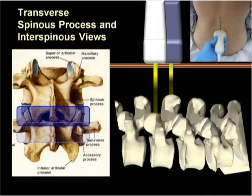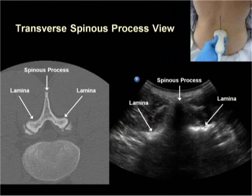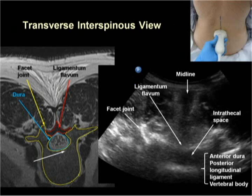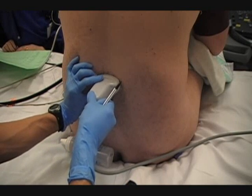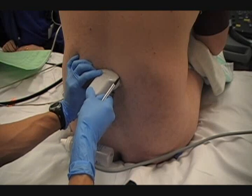The probe is now turned into a transverse orientation to obtain the spinous process and interspinous views. If the probe is placed over a spinous process, the process and the adjacent lamina are recognizable by the acoustic shadow that they cast — this is the transverse spinous process view. Sliding the probe either cephalad or caudad will bring the beam into the interspinous and interlaminar space and give you the transverse interspinous view of the vertebral canal. The probe position may be fine-tuned by small sliding and tilting movements to improve the view of the vertebral canal.